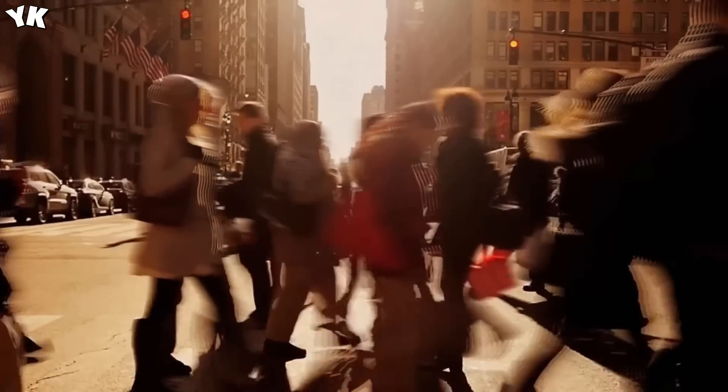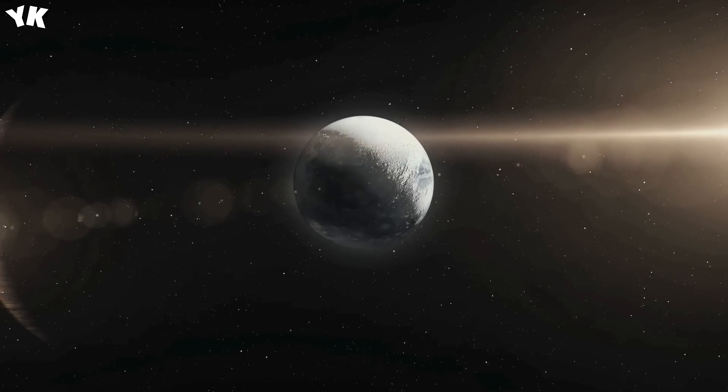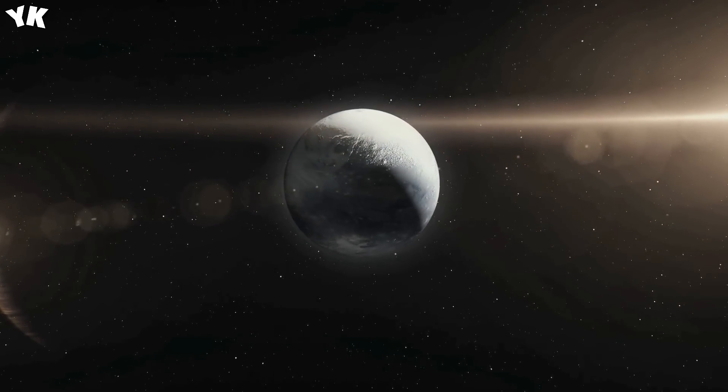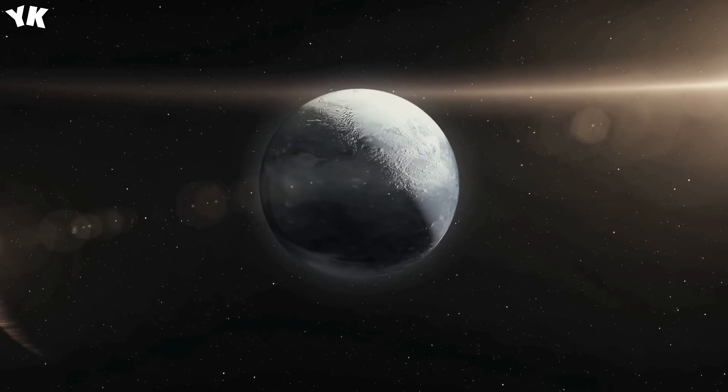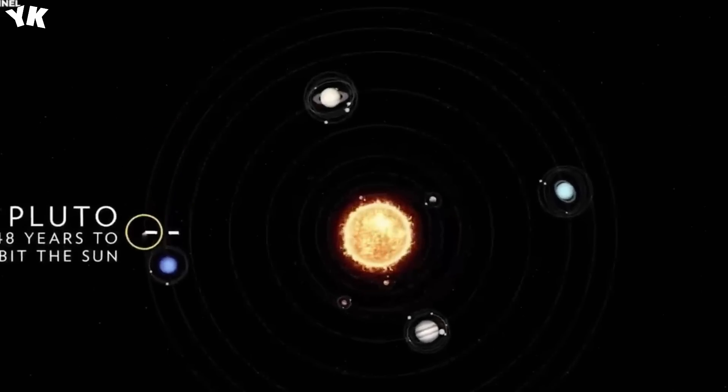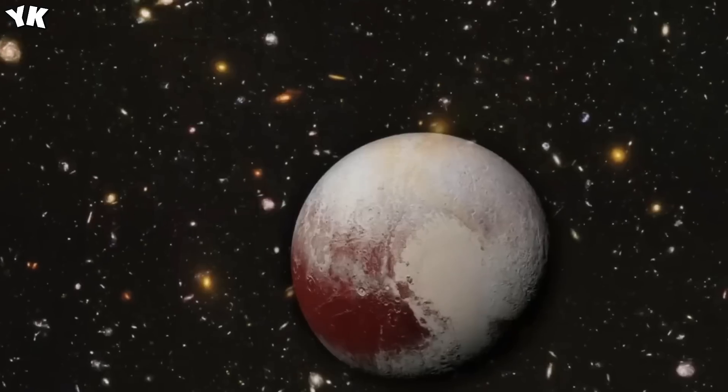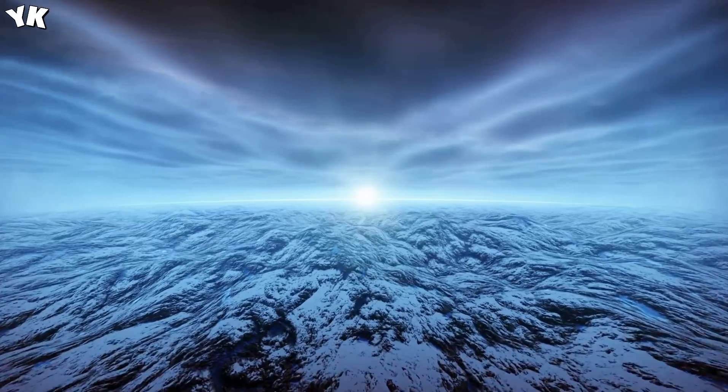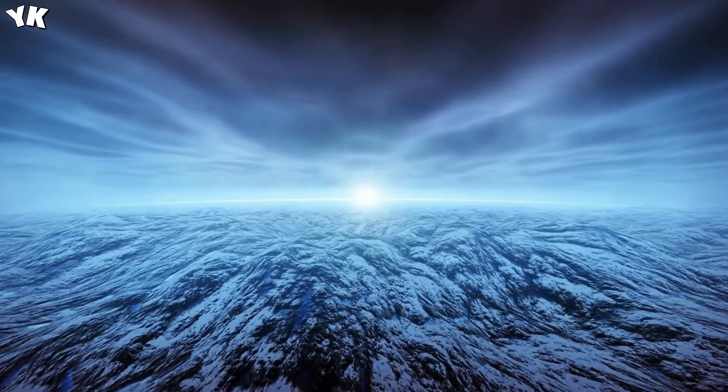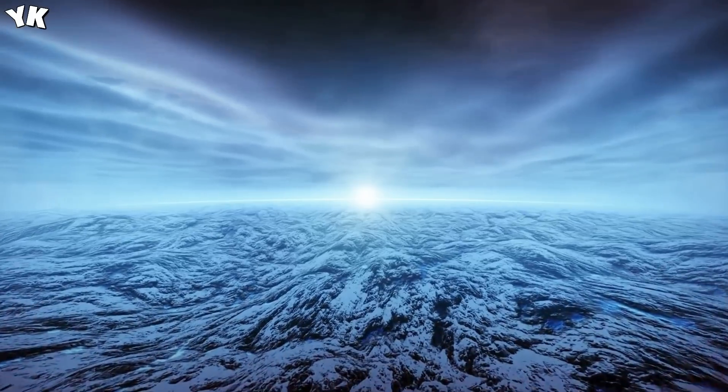Pluto's journey around the Sun is marked by unparalleled characteristics. Its orbit spans an extensive 248 years, and since its discovery in 1930, Pluto has yet to complete a full revolution. Its highly elliptical orbit departs from the nearly circular orbits of major planets. Additionally, Pluto's orbit is inclined at 17 degrees to the ecliptic plane, making its path steeper compared to other planets.